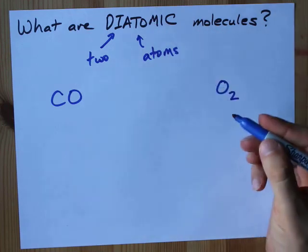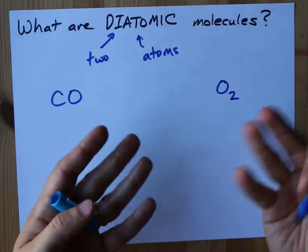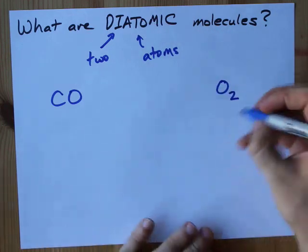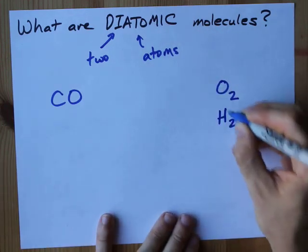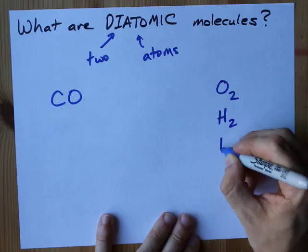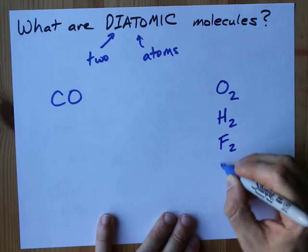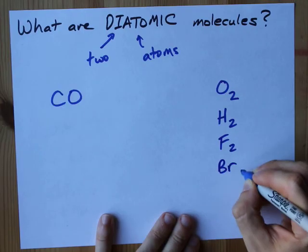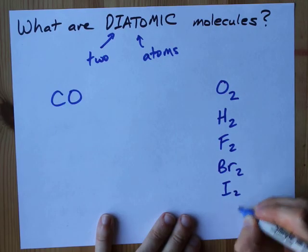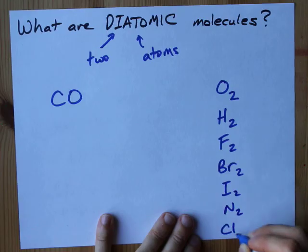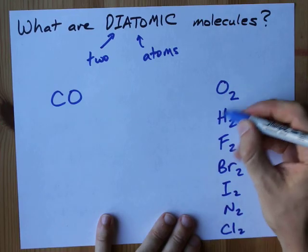The most common diatomics you're probably going to deal with are called the Hoffbrinkels. That's H2, F2, Br2, I2, N2, and Cl2.